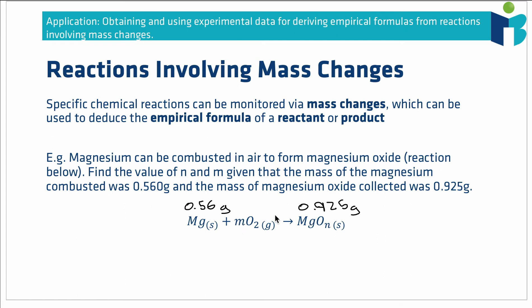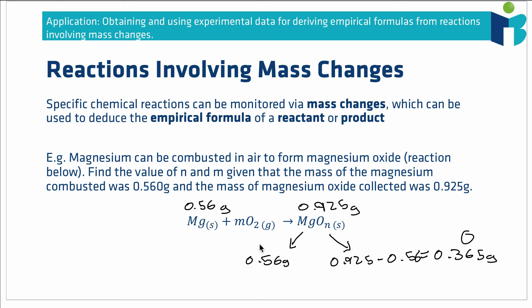The mass of the magnesium atoms hasn't changed; the only difference is that magnesium is now in a compound with oxygen. So any extra mass gained must come from oxygen atoms. In our magnesium oxide we have 0.56 g of magnesium and (0.925 − 0.56) = 0.365 g of oxygen. Converting to moles: 0.56 ÷ 24.31 = 0.0230 mol of magnesium.